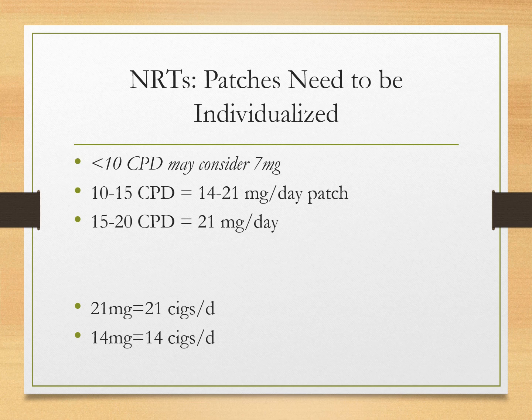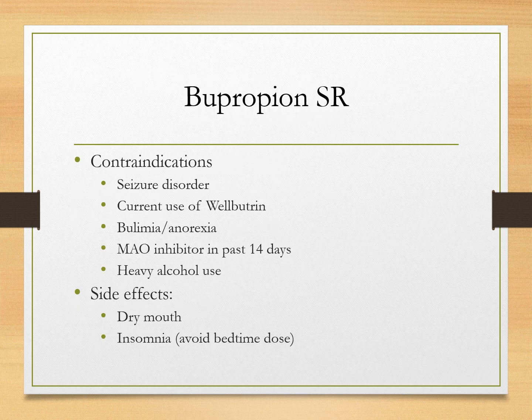The dose is based on the number of cigarettes: fewer than 10 cigarettes per day — 7 mg; 10 to 15 cigarettes — 14 to 21 mg; more than 15 or 20 cigarettes — 21 mg is usually prescribed. Bupropion is an antidepressant, but it is contraindicated if there is a seizure disorder, eating disorders like bulimia or anorexia, or if MAO inhibitors are being taken — stop MAO inhibitors for 14 days before starting bupropion. Heavy alcohol use is also a contraindication. Side effects include dry mouth and insomnia, so it is given in the morning, not at bedtime.